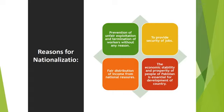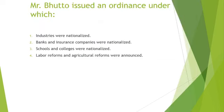Mr. Bhutto issued an ordinance on 2nd January 1972. Under this, industries were nationalized, educational institutions were nationalized, banks and insurance companies were nationalized, and labor reforms and agricultural reforms were announced.